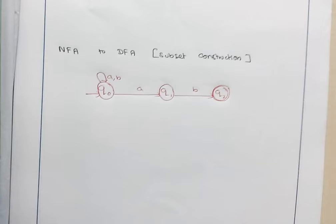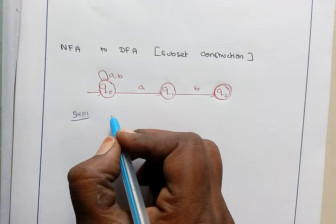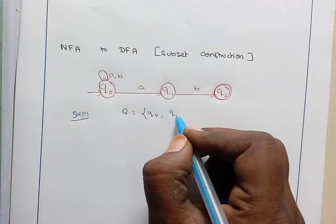The method used here is called the subset construction method. Step 1 is to write all possible subsets of the states. Here Q is a finite set of states containing Q0, Q1, and Q2, and we are going to write the subsets for Q.